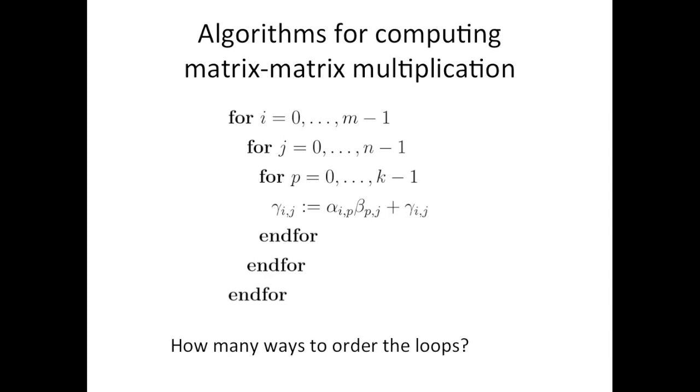Well, there are three choices for the outermost loop. You can choose the loop index by i, j, or p. Once you've chosen which loop to use in the outermost loop, you have two choices left for the second loop. And once you have chosen the outermost loop and the second loop, you only have one choice left for the third loop. So, there are three times two times one equals six choices.